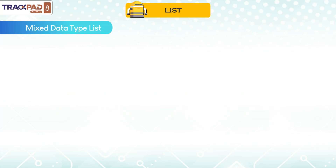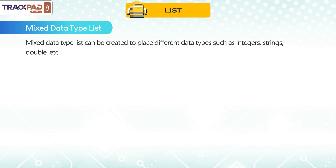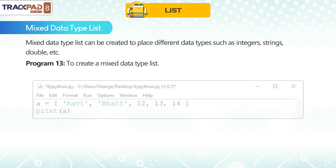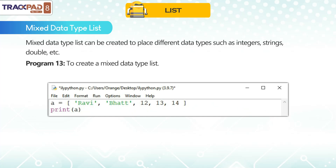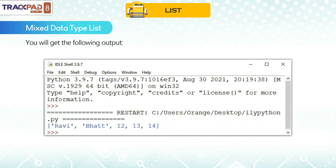Mixed Data Type List. A mixed data type list can be created to place different data types such as integers, strings, double, etc. Program 13: To create a mixed data type list, you will get the following output.